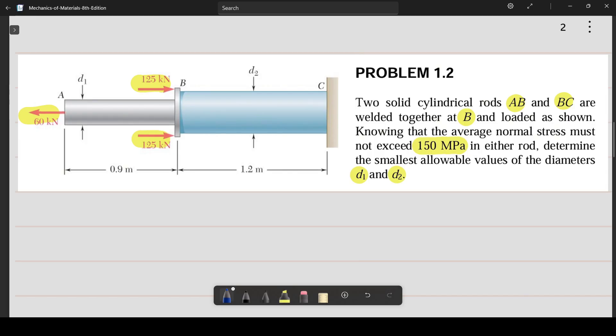First we start by writing down the general formula we discussed in the previous session. Stress equals load divided by area. Now based on the information given in the question, we already have the value for the force and the stress. What we need to find is the diameter.